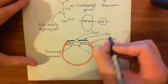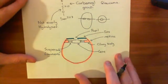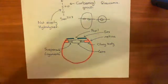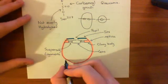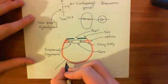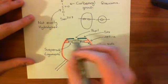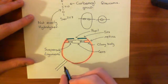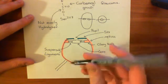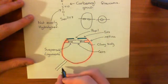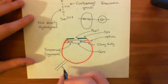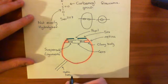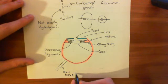Here comes the optic nerve. This will relay the information to the brain. This is the right eye, since the optic nerve is going to the left, going in through the optic canal into the brain. This is the optic nerve, or cranial nerve CN2.